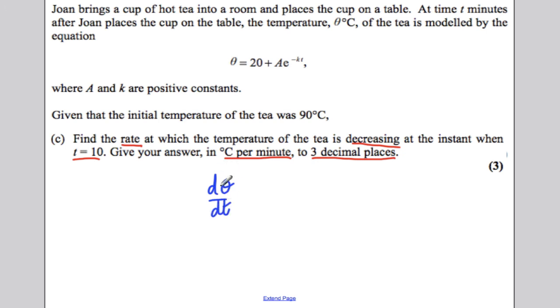That is the rate at which the temperature is dropping. If we differentiate this here, if we were to differentiate this with respect to t, we would get negative AKe to the negative Kt. Because we'd differentiate the exponent and get negative K, multiply it by the A, and then keep your e to the negative Kt.